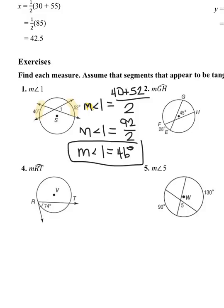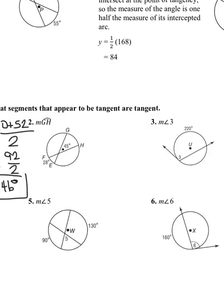Now we're going to move on to question number two, which is also two secants. But this time they gave you the angle in between the secants. So we're going to set it up but solve it a little differently — we're looking for the intercepted arc GH. The angle is 45 degrees, which they already gave us, so 45 degrees equals 28 degrees plus arc GH, divided by two. That's a GH, not a 6H.